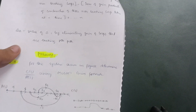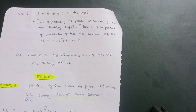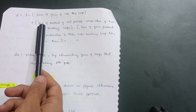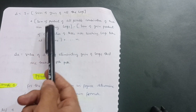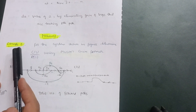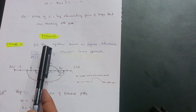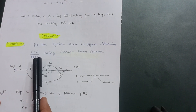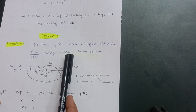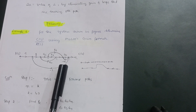It will be difficult to understand if I just pronounce the formula words, so let us understand the problem first and then it will be clear. The first example: for the system shown in the figure, determine C(s)/R(s), which is the transfer function, using Mason's Gain Formula.